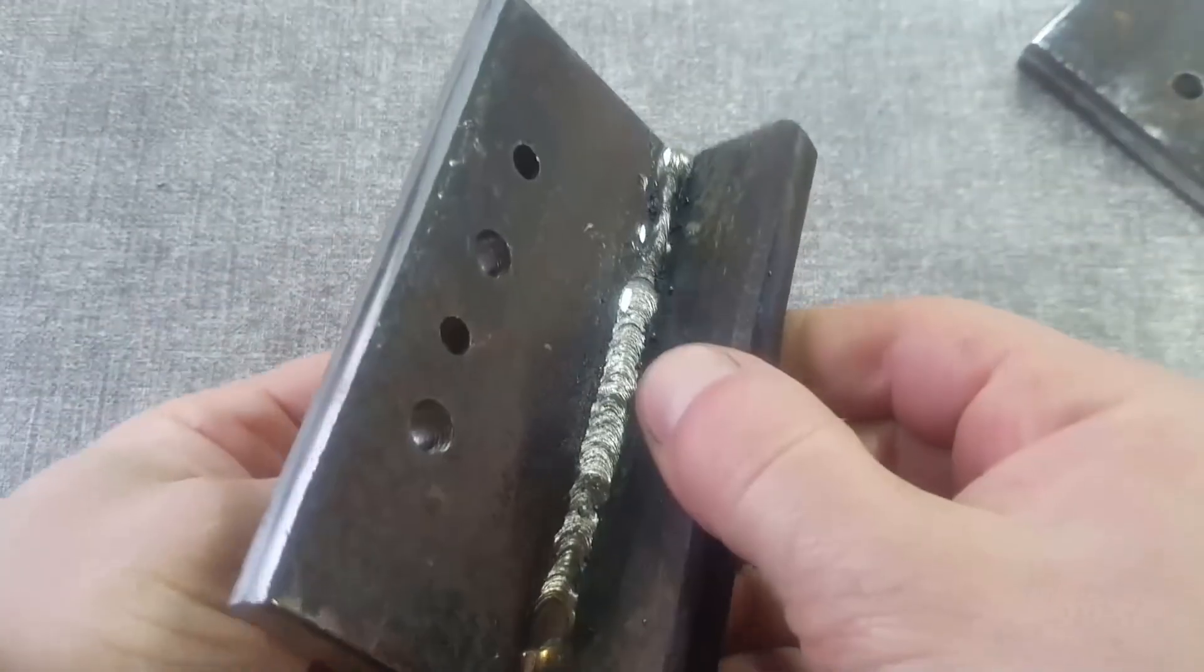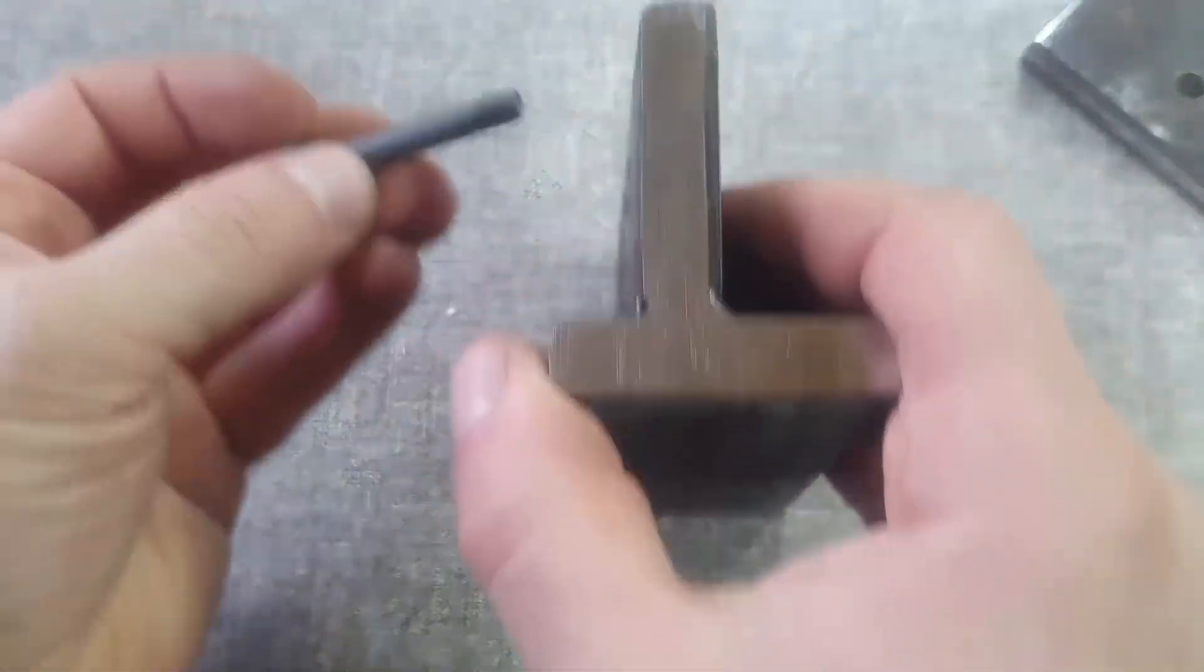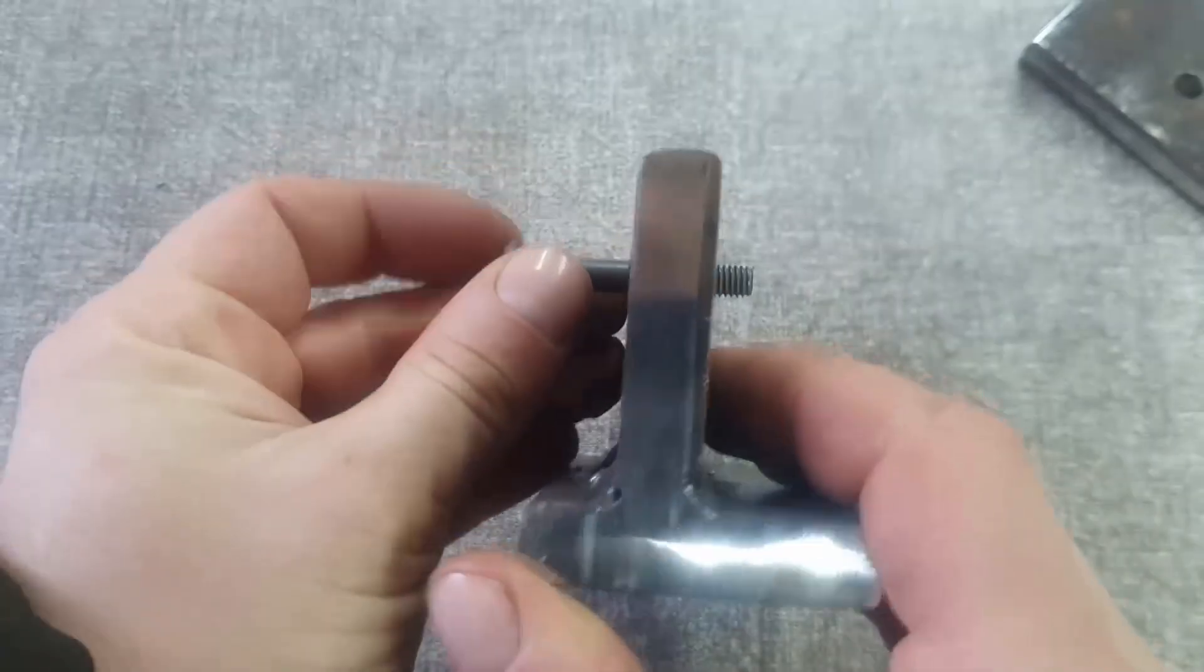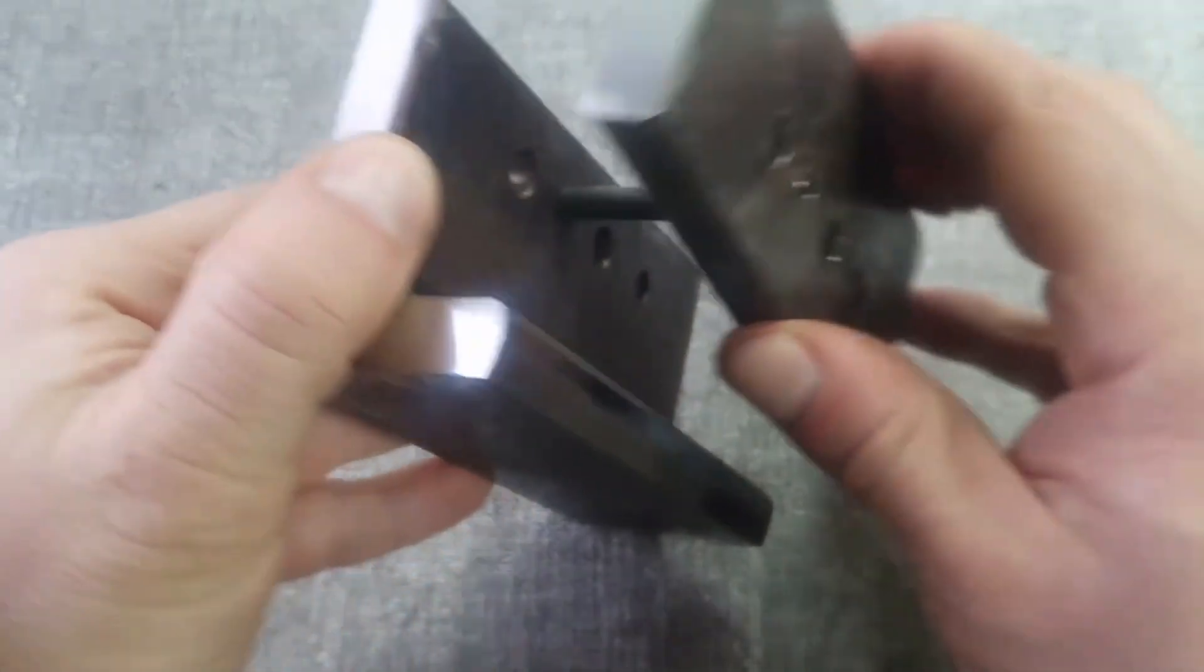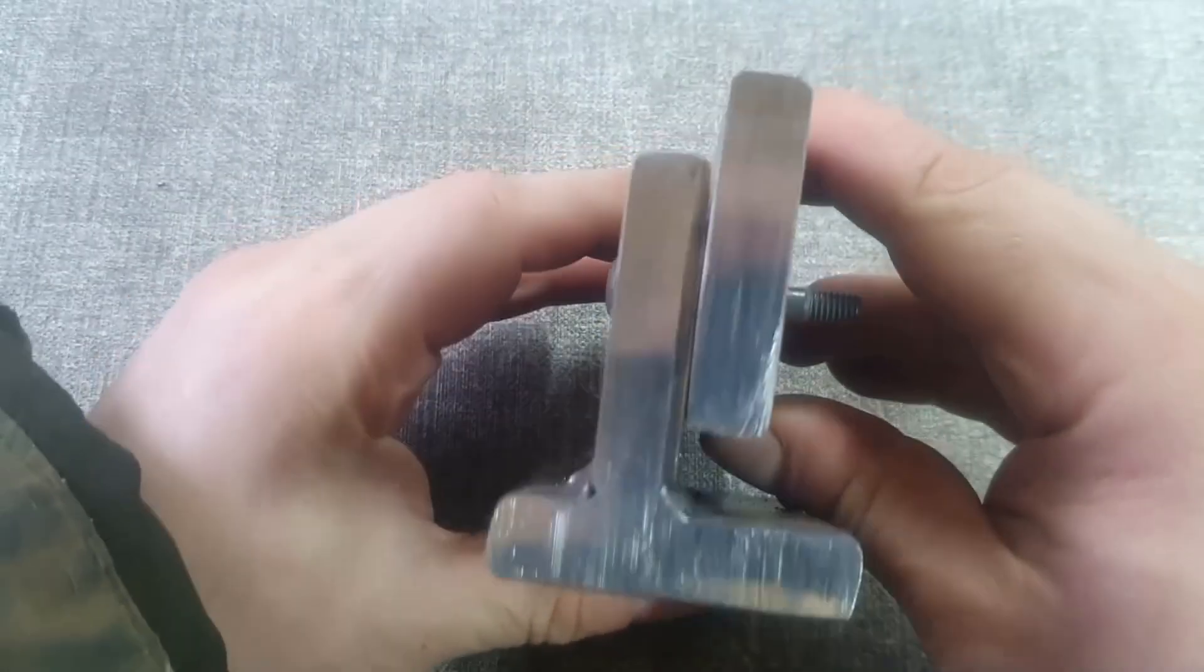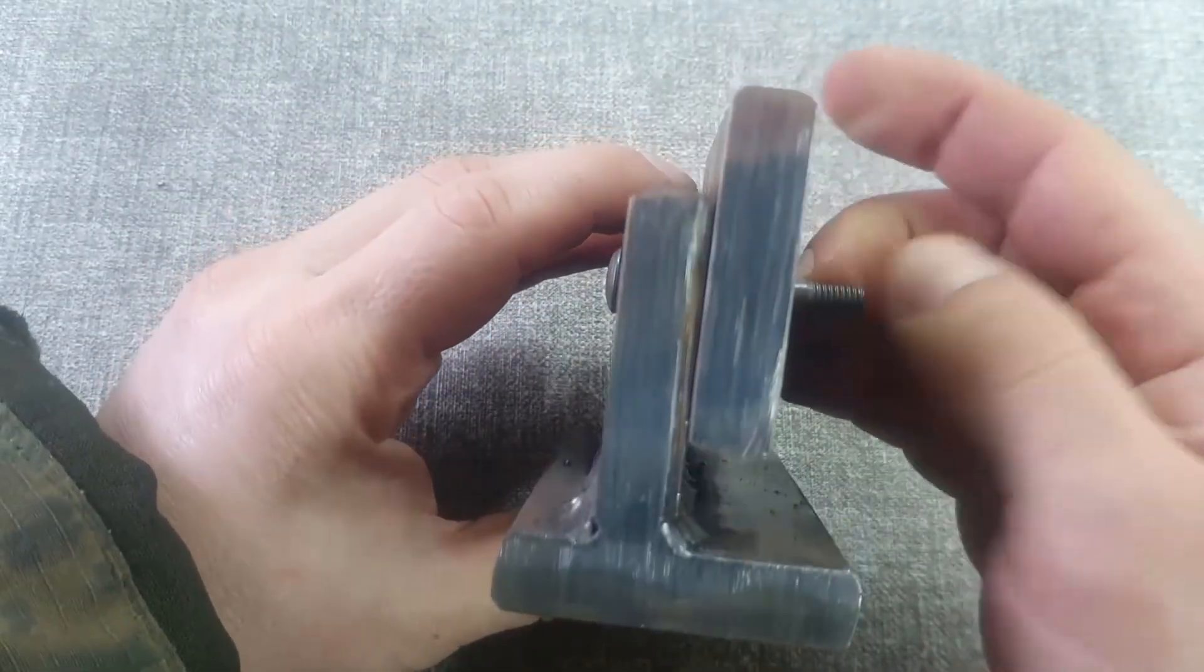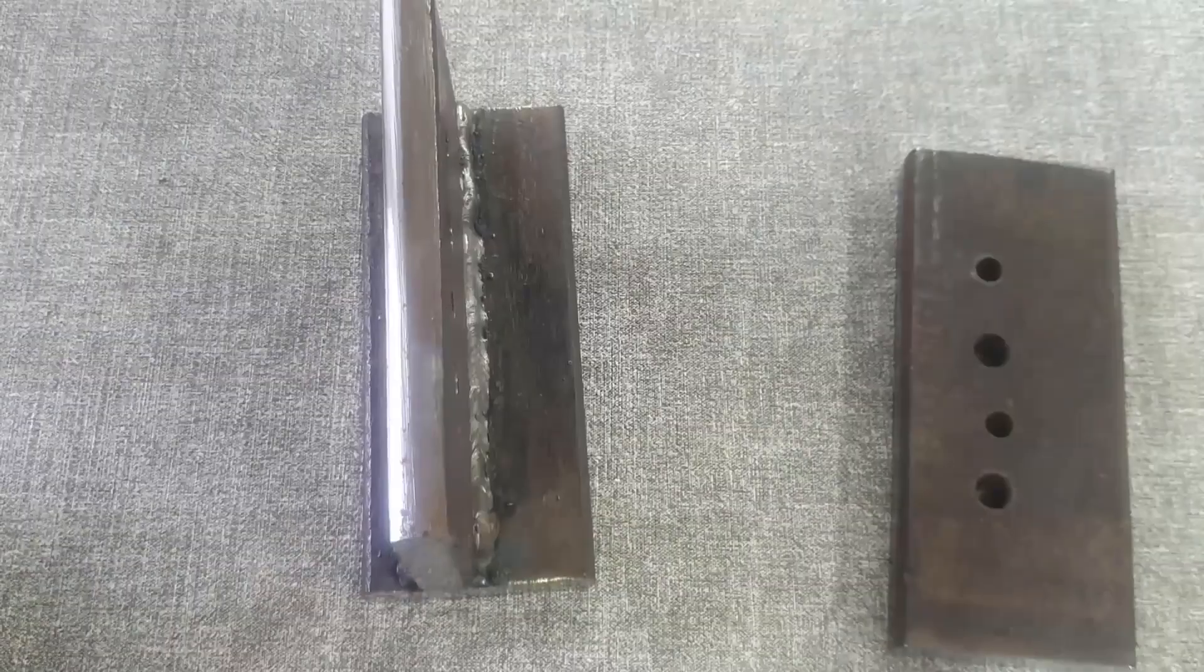And today, we will attempt to test with a hydraulic press whether a titanium bolt, which is half the weight of a steel bolt of the same size, can withstand at least approximately the same load. Simply pressing bolts with the press is stupid. Bolts are not intended for compression. Therefore, today we will test them for shear and fracture.